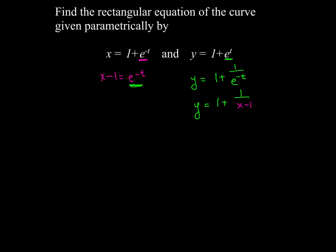From here it's simply a matter of taking your time and doing your algebra to get a common denominator. So this would be x minus 1 over x minus 1, the same thing as 1, plus 1 over x minus 1.